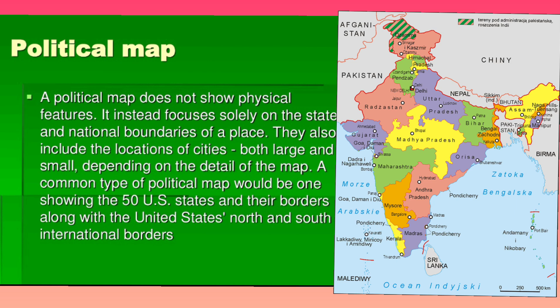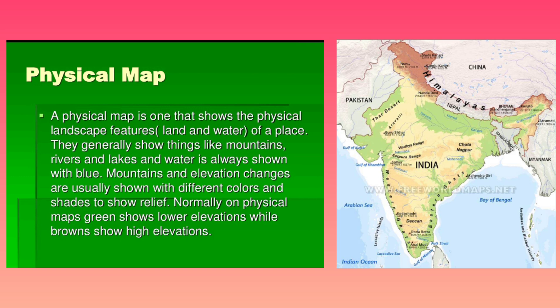Next, we shall learn about physical map. A physical map is a map which gives information about the physical features of India. The physical features are nothing but mountains, rivers, lakes, and different types of landforms. Here in the map, we can see very clearly that different colors are used: blue color indicates water, brown color indicates mountains, and green color indicates forest. So from a physical map, we learn about all the different types of physical features — mountains, rivers, plains, plateaus, and so on.